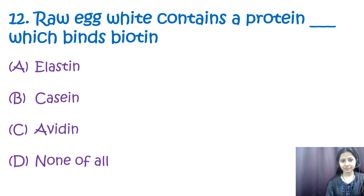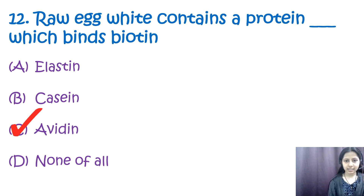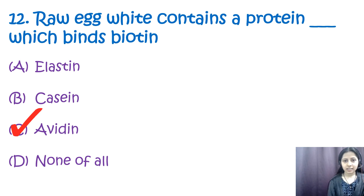Question number twelve: raw egg white contains a protein which binds biotin. Options are: a) elastin, b) casein, c) avidin, d) none. The correct option is c, avidin. Avidin is a protein in raw egg whites that binds with biotin. Elastin is a protein providing elasticity to tissues such as skin, blood vessels, and lungs. Casein is the main protein component of milk and cheese.